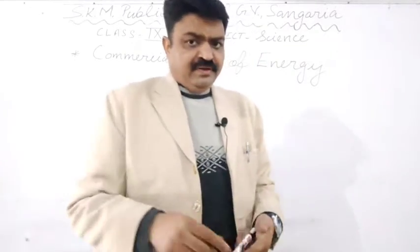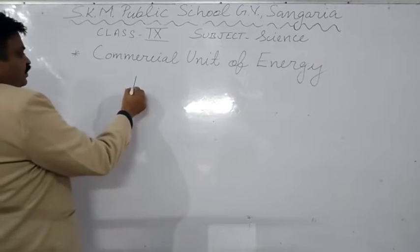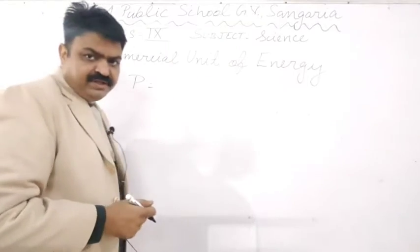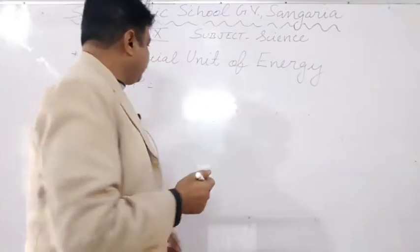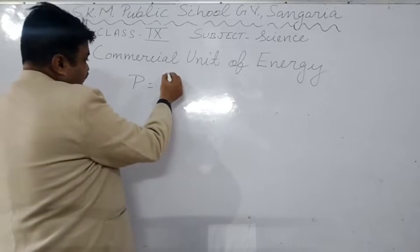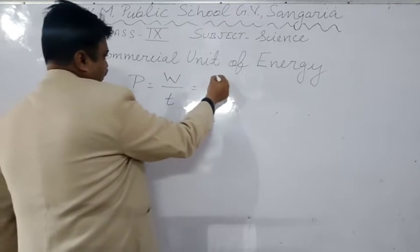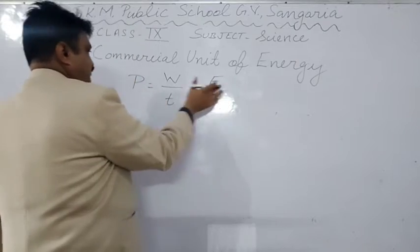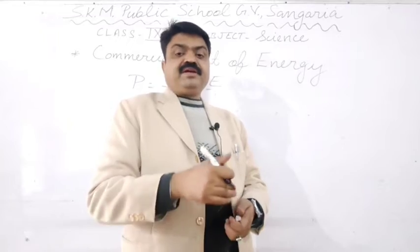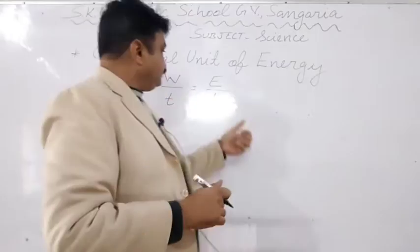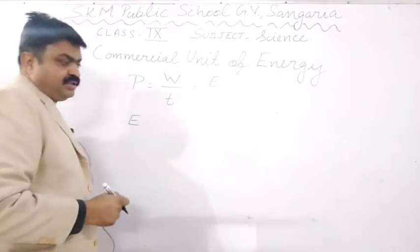So kilowatt hour, or the unit, is the commercial unit of energy. How do we get it? We will discuss that now. Power is the rate of doing work, or we can say the energy consumed per unit time. From this formula of power, we can also get the formula of energy.